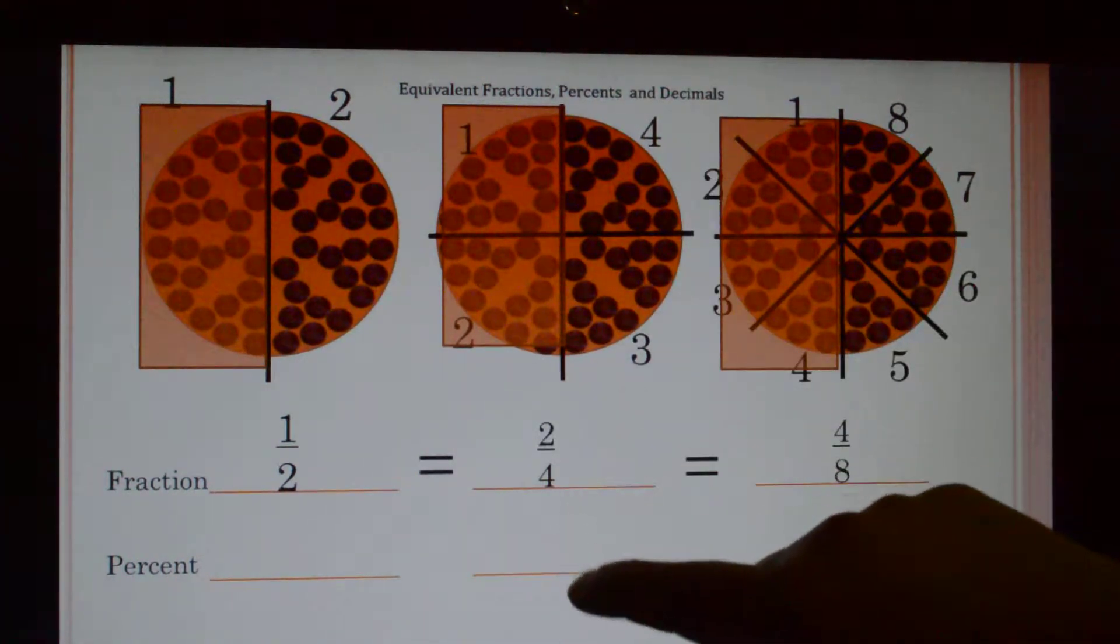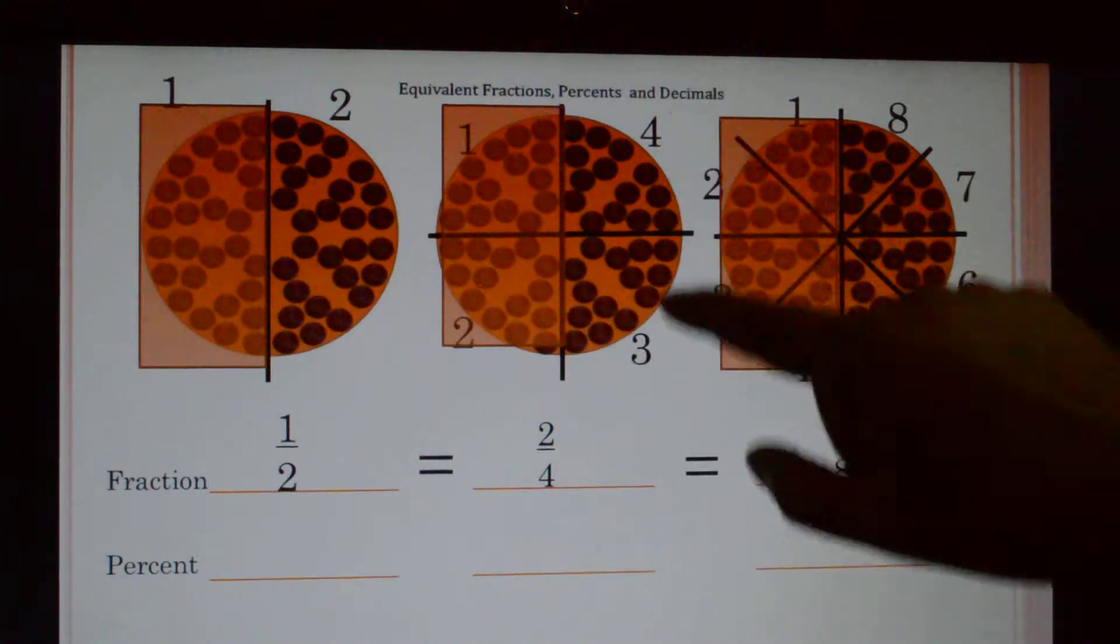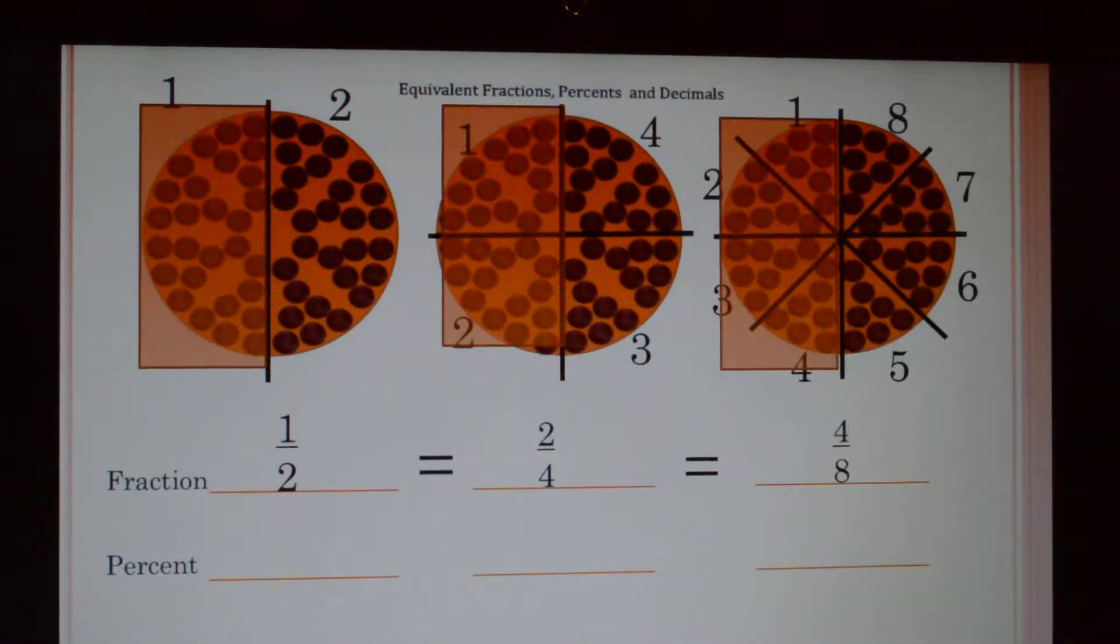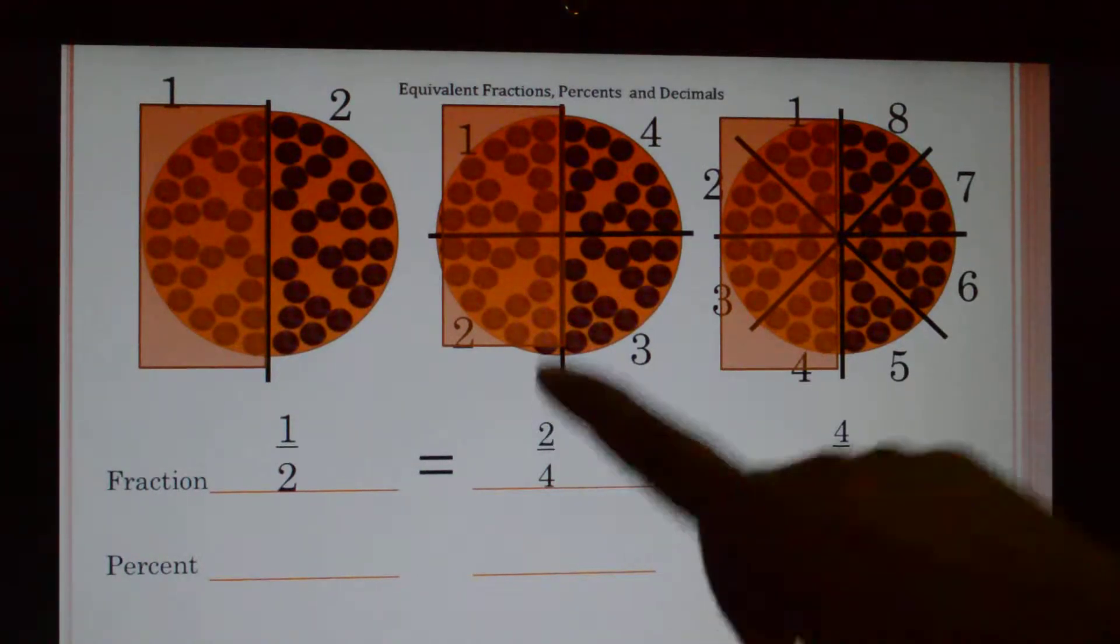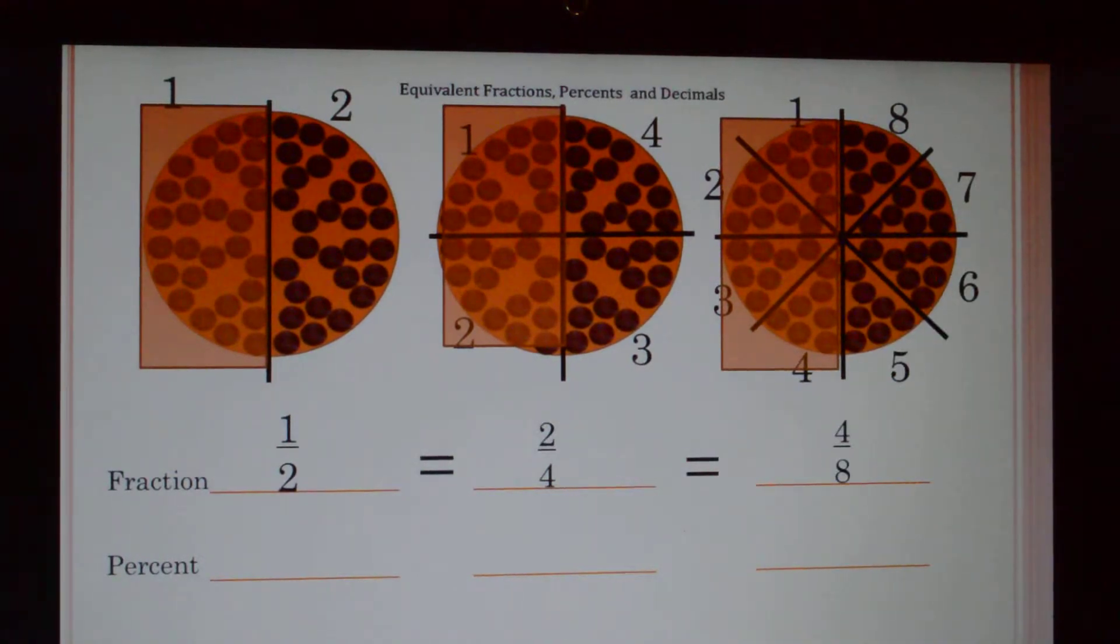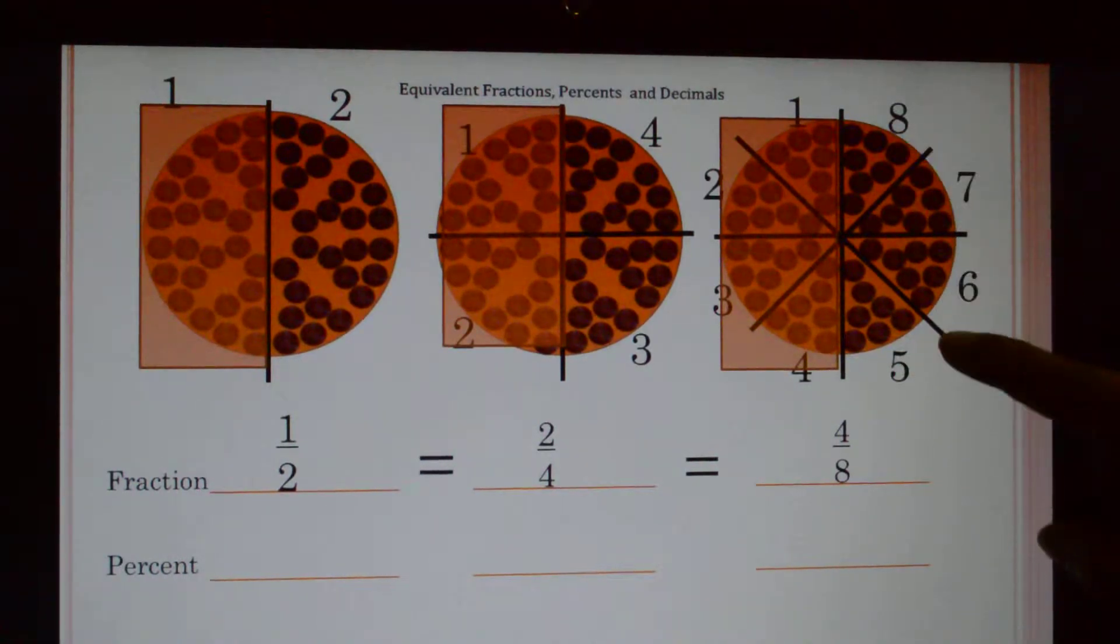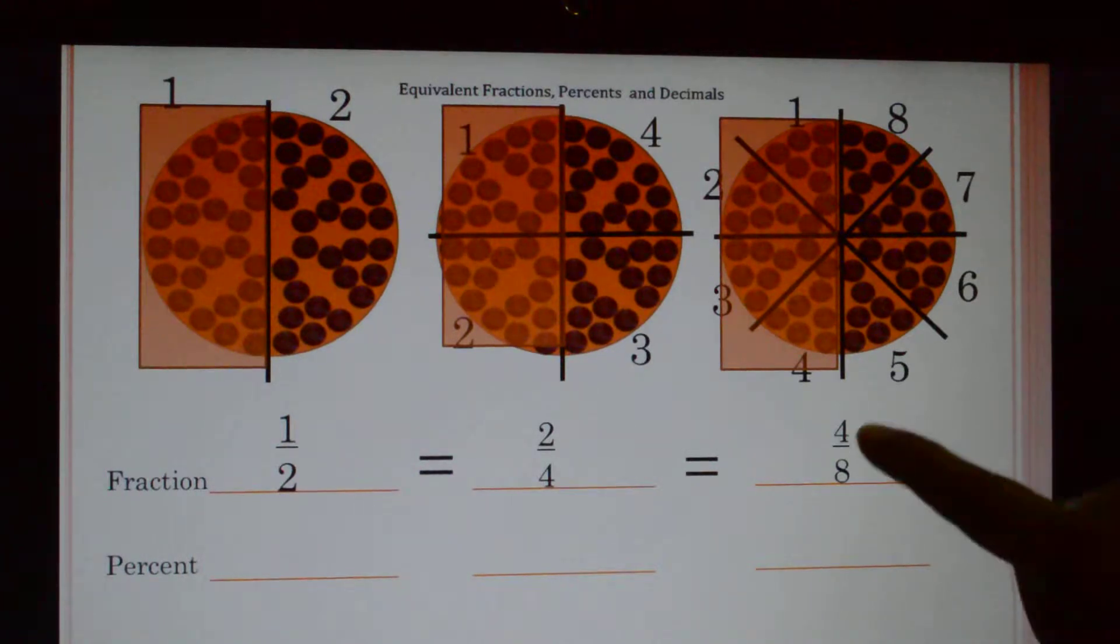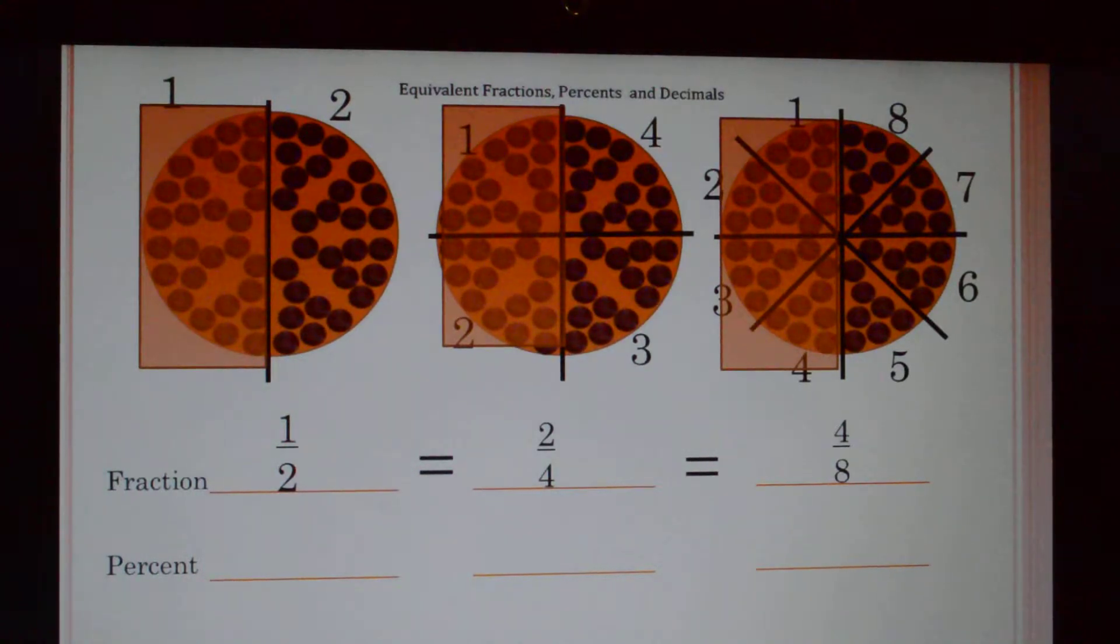Your second pizza was cut into four slices and you ate two of four, so two of four is equal to two fourths. Your last pizza was cut into eight slices and you ate four of eight, or four eighths.